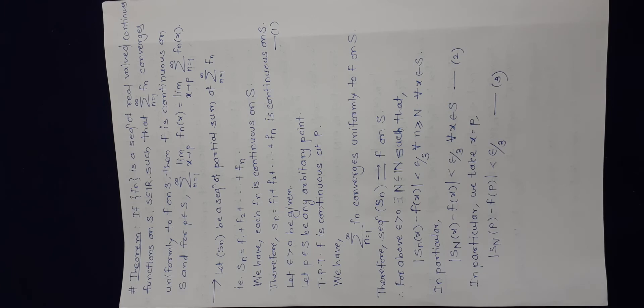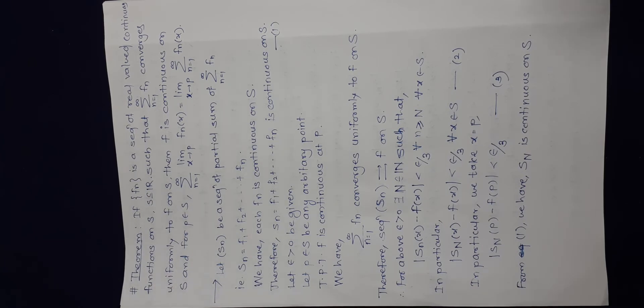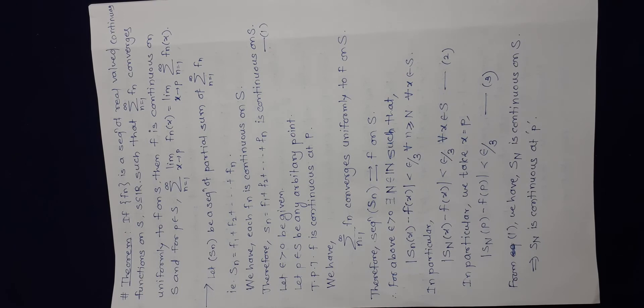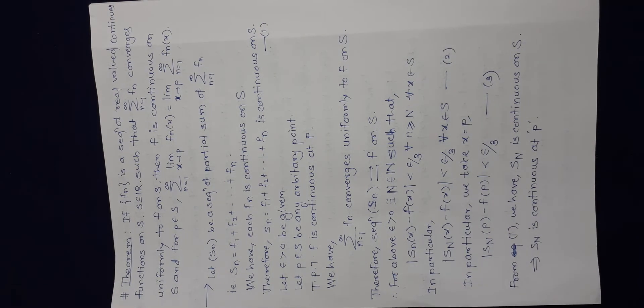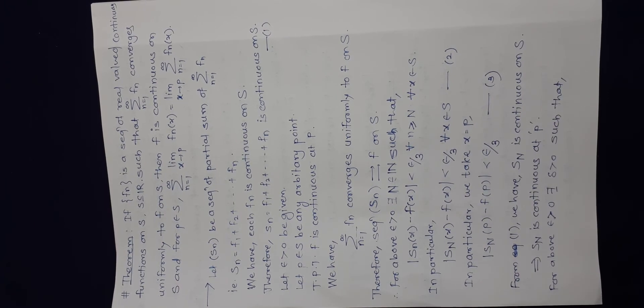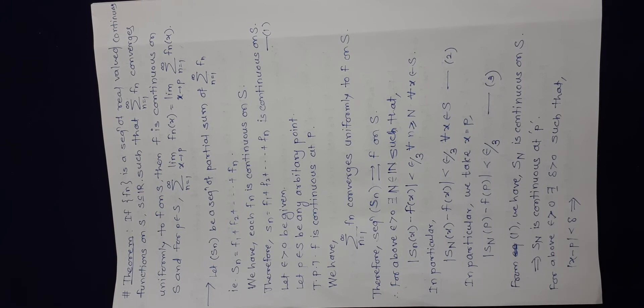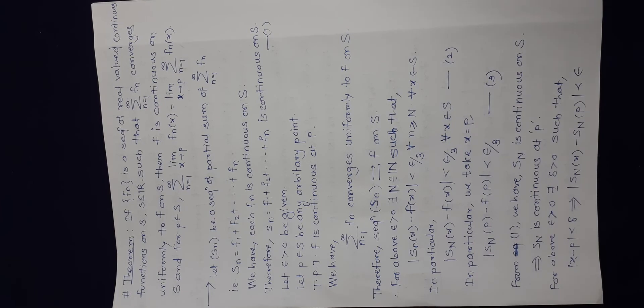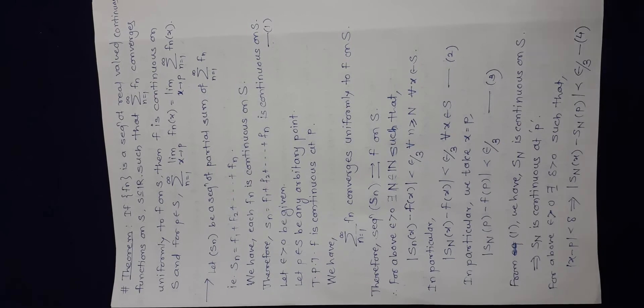From equation 1, sn is continuous, so s of capital N is also continuous on S. As it is continuous on S, it is continuous at point p also. By the definition of a continuous function, for the above epsilon greater than 0, there exists delta greater than 0 such that mod x minus p less than delta implies mod sN of x minus sN of p is less than epsilon by 3. We call this equation number 4.